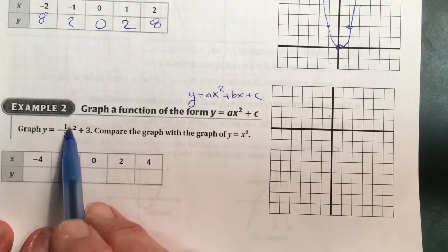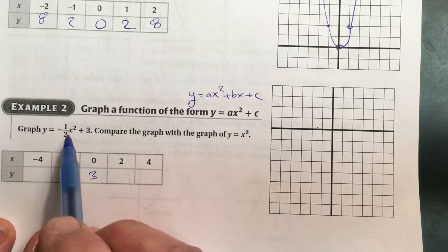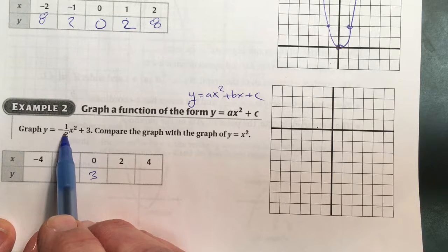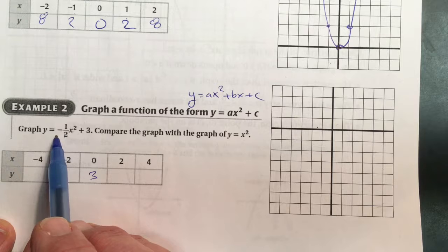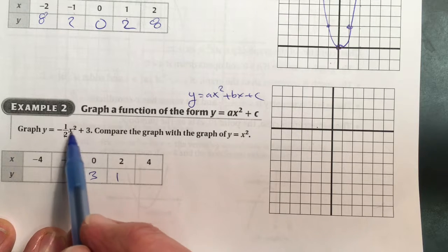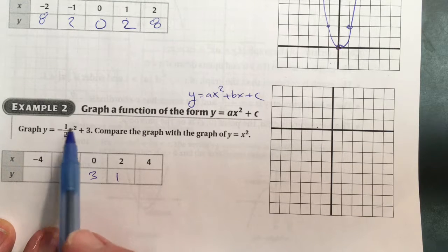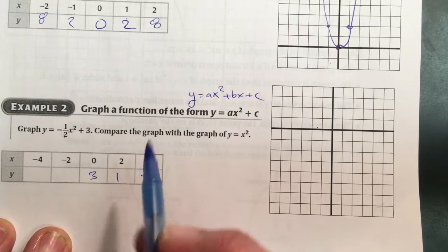So 0 squared is 0, plus 3. So I have 3 now. I'm not at the origin. 2 squared is 4, 4 divided by 2 is 2. It's negative 2. Plus the 3 is just 1. 4 squared is 16, half of 16 is 8. It's negative 8. Negative 8 plus 3 is negative 5.